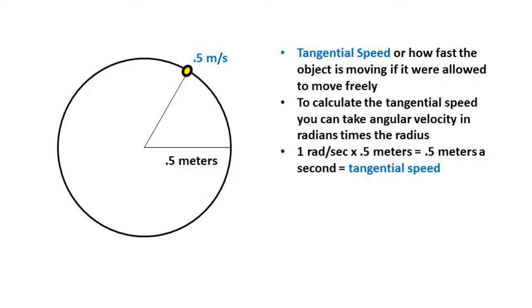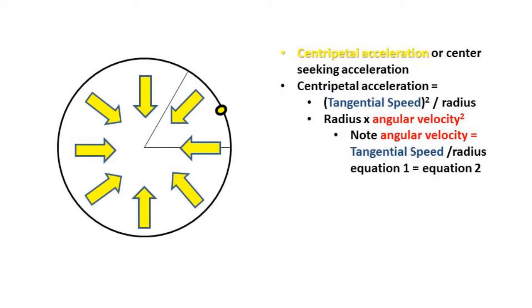It's important to note that if you were to release an object from rotational motion, the object will go tangential to the circumference of the circle. When the ball rotates around a circular path, the direction is constantly changing. Being the ball is constantly changing direction, there is an acceleration felt by the ball. The acceleration that is felt is known as centripetal acceleration.